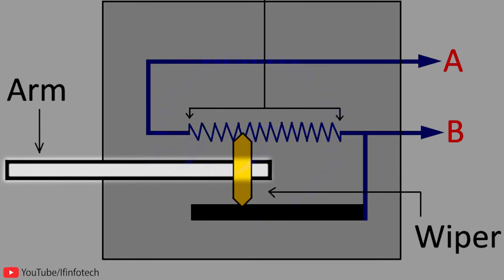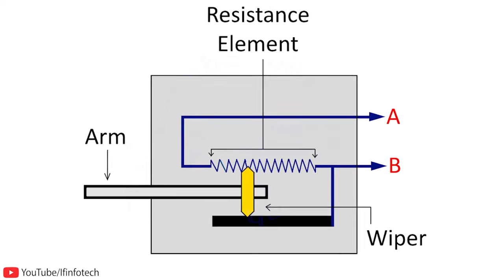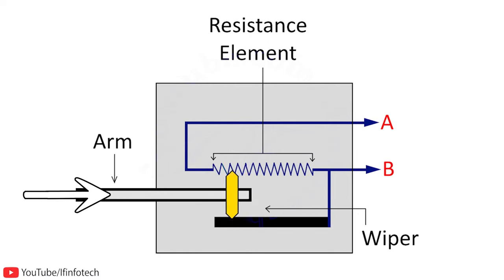This arm moves in a linear direction when linear displacement is given to it. As the arm moves to and fro, the wiper slides along the resistance wire and we get varying resistance between points A and B.